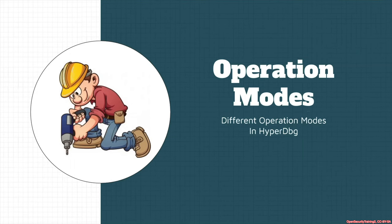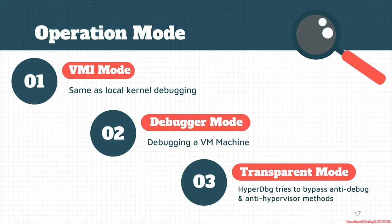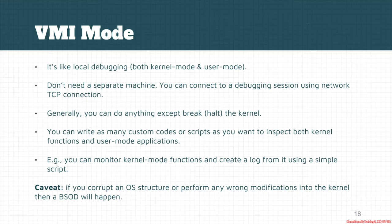As you saw in the earlier slides, there are currently three operation modes in HyperDBG. One is VMI mode, or Virtual Machine Introspection mode — it works exactly like local kernel debugging in WinDBG. We also have debugger mode, which I'll explain later; if you want to debug a VM or physical machine, use debugger mode. The third mode is transparent mode, where HyperDBG tries to bypass anti-debug or anti-hypervisor methods.